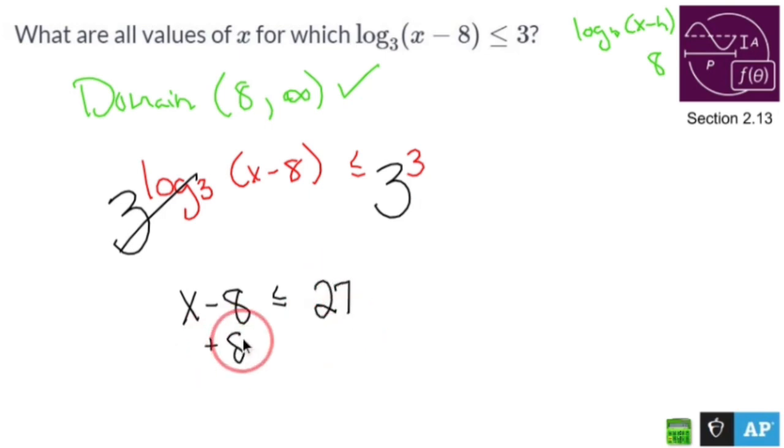If I add eight and if I add eight, cross you out, I end up with x is less than or equal to 35.